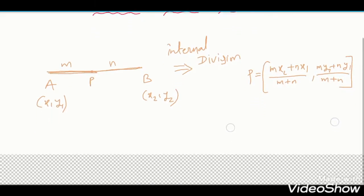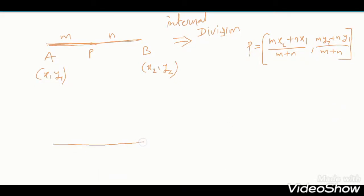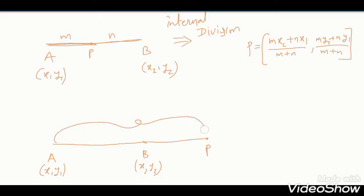Now we use the same concept to find external division. External division: same line segment AB, A is (x1, y1), B is (x2, y2). But in external division, P lies on the extended AB — meaning P lies outside AB. In ratio m:n, AP is m and PB is n. This is called external division.